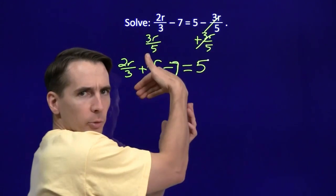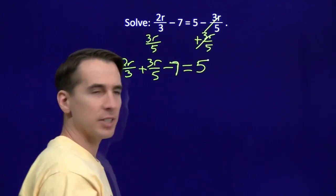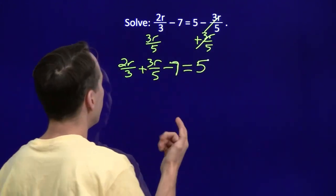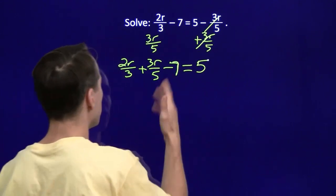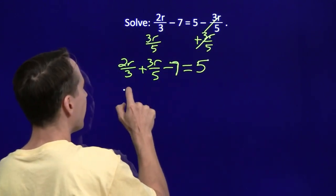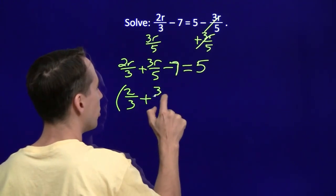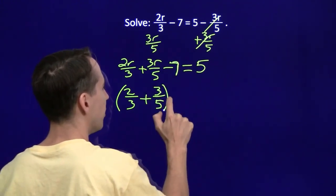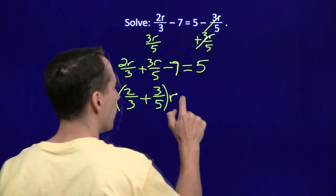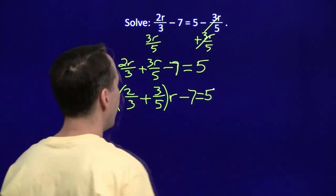So I've succeeded. I've got all the variable terms on the left side. Now I've got to combine these. I'm going to combine these just like we would if the fractions were any other number. We're going to factor out the r. So you have 2 thirds plus 3 fifths times the r minus 7 equals 5.